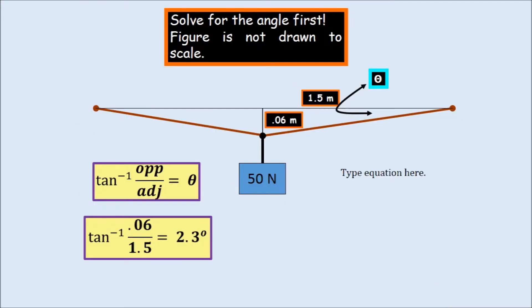So solving for theta, we see that it's going to be arc tangent equals 0.06 over 1.5 or 2.3 degrees. Again, there wasn't much sag left in the line. That's kind of dangerous. So we're going to probably end up with quite a large tension because we have such a small sag.